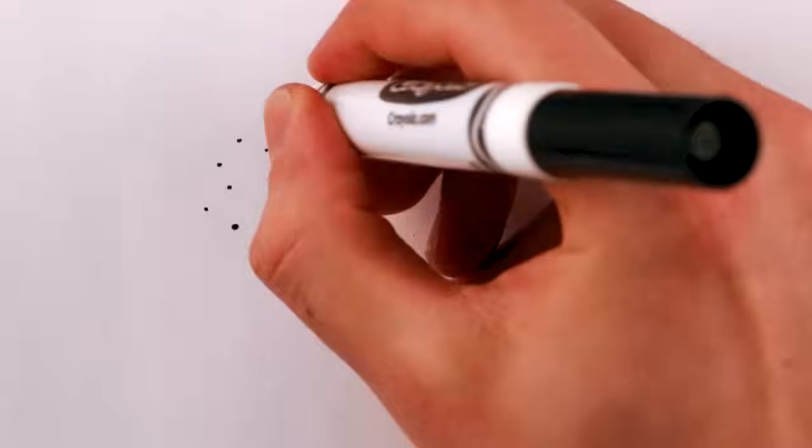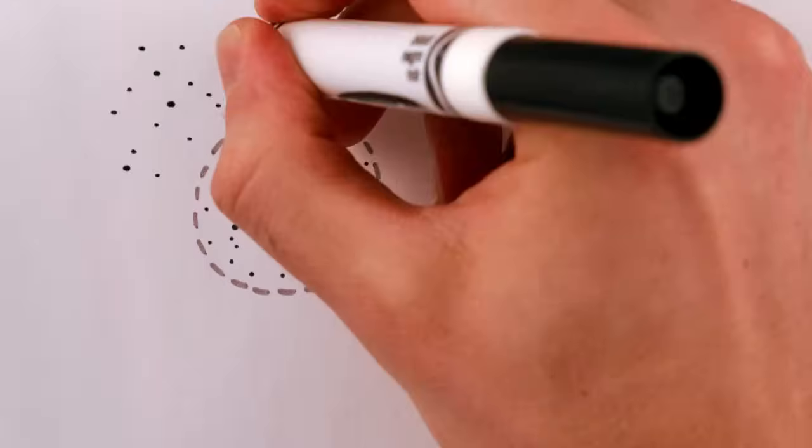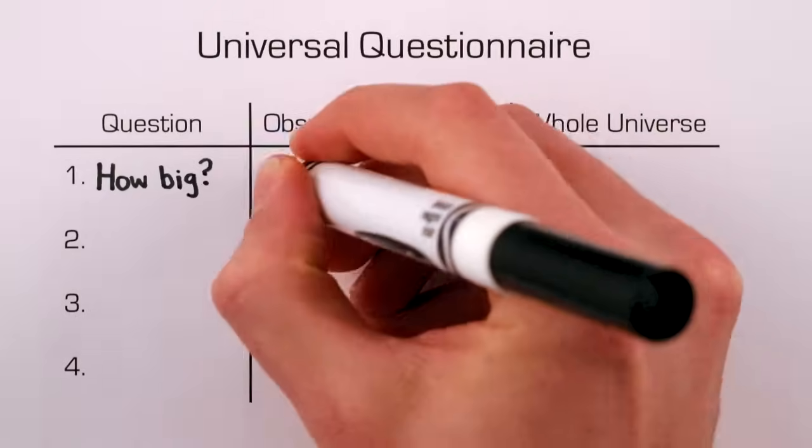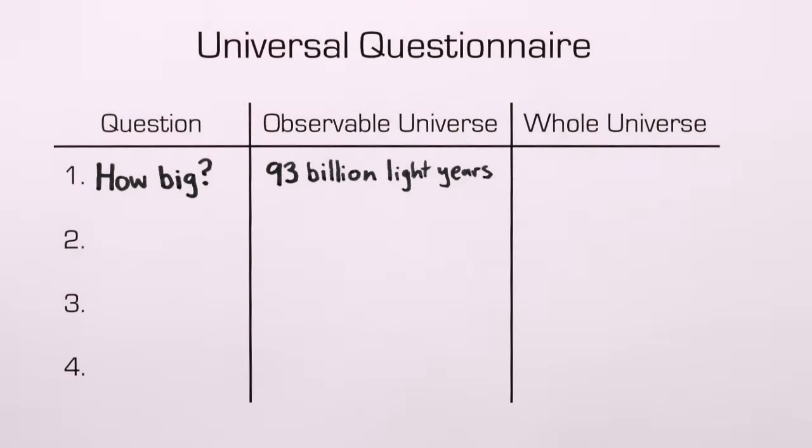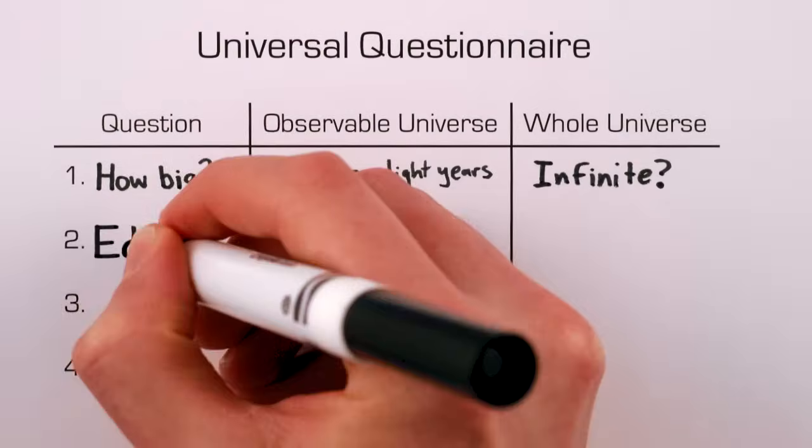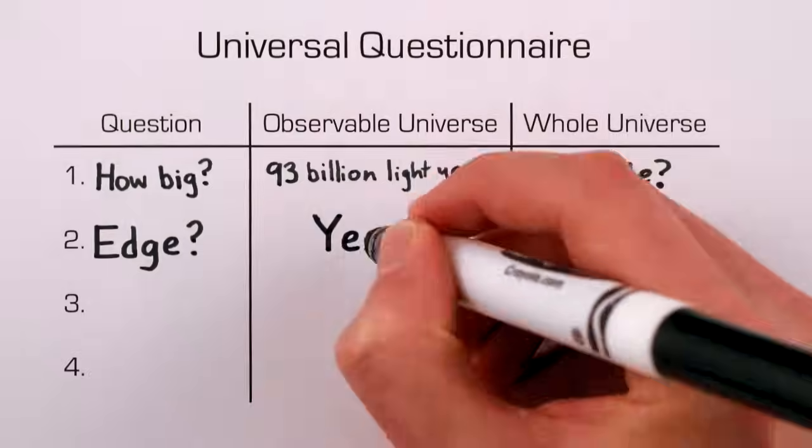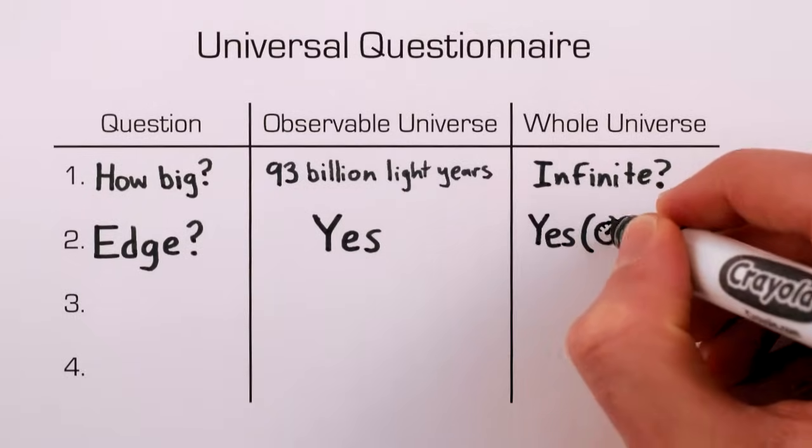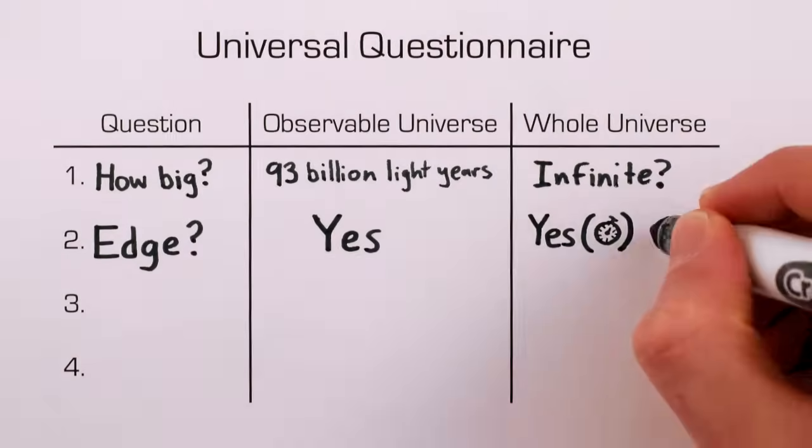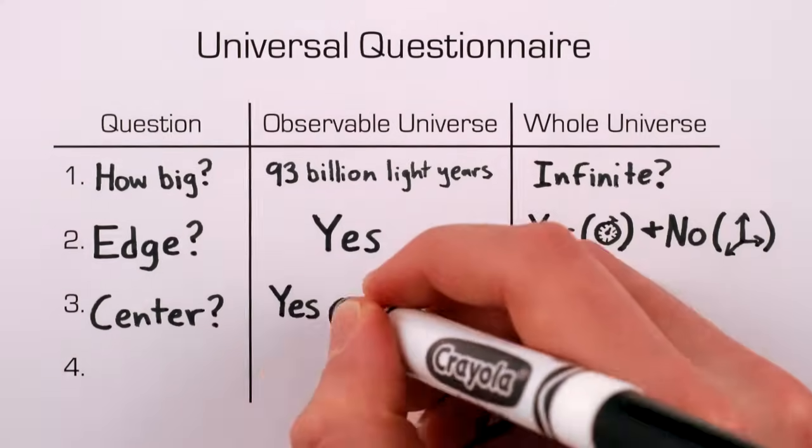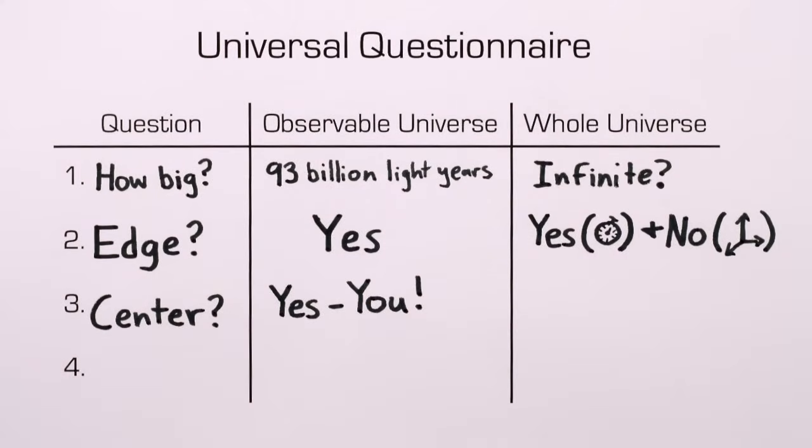So here we are, sitting at the center of our observable piece of the whole universe. How big is the universe? Well, the observable universe is currently 93 billion light years across. The whole universe is probably infinite. Does the universe have an edge? The observable universe does. It's 46 billion light years away in any direction. And the whole universe has a temporal edge, or what we call a beginning, but almost certainly not a spatial one. Does the universe have a center? Again, the observable universe does. You. The universe as a whole? Almost certainly not.